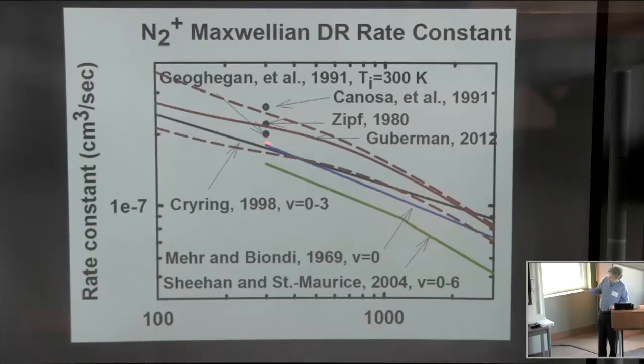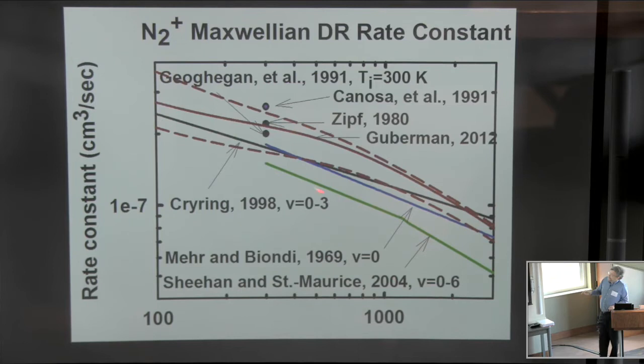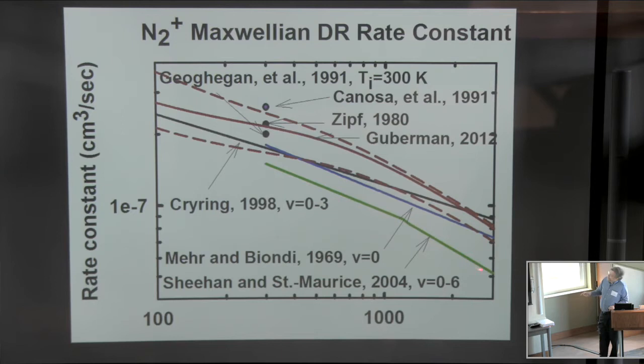The temperature data agrees up to about 500 degrees, then departs from the theory and comes back at the highest temperatures. But it's also a straight line which does not agree with the theory. A reinterpretation of an early single-pass merged beam experiment of Brian Mitchell's puts the rate constant over here, and that clearly appears to be incorrect.